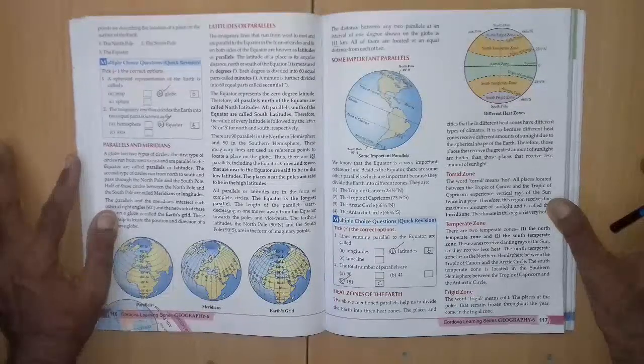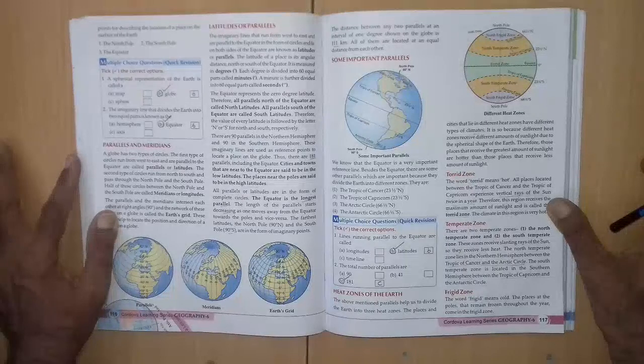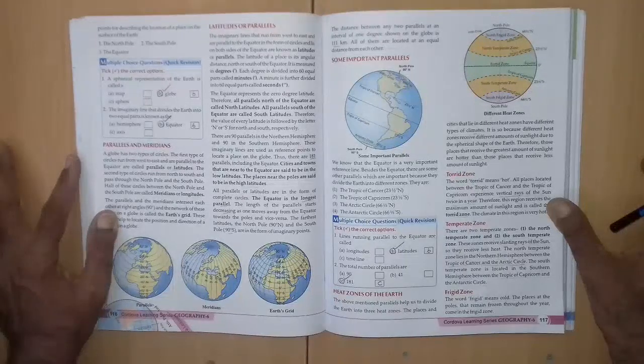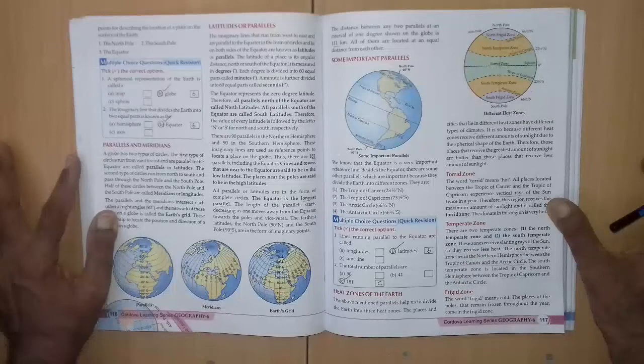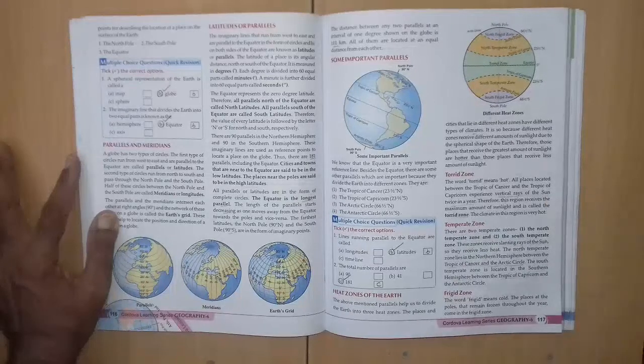Question 2nd, the total number of parallels are A 90, B 41, C 181. Right answer is C 181.